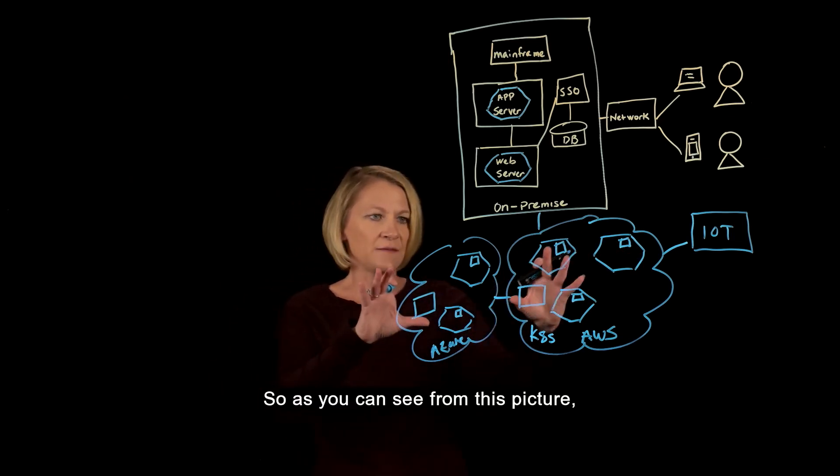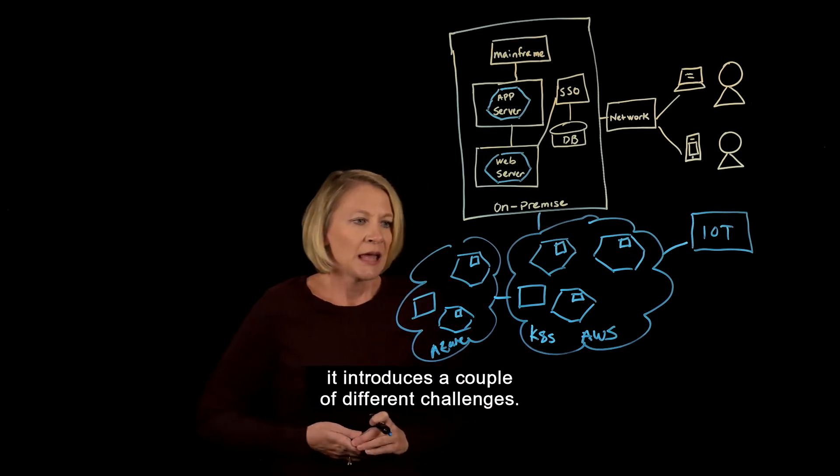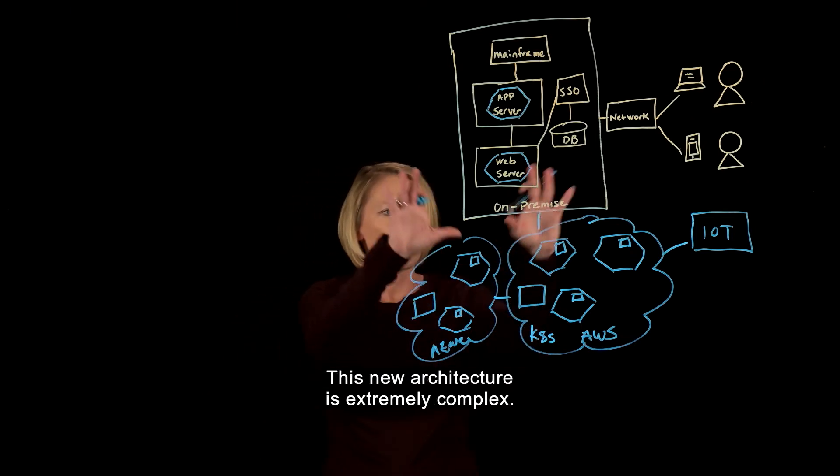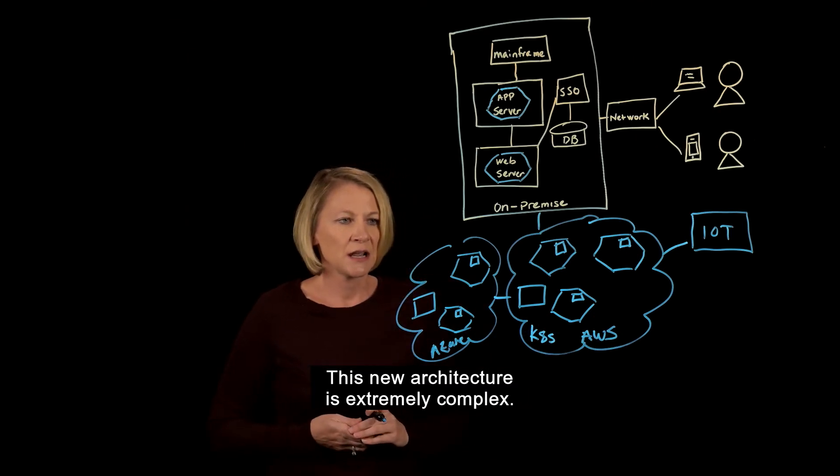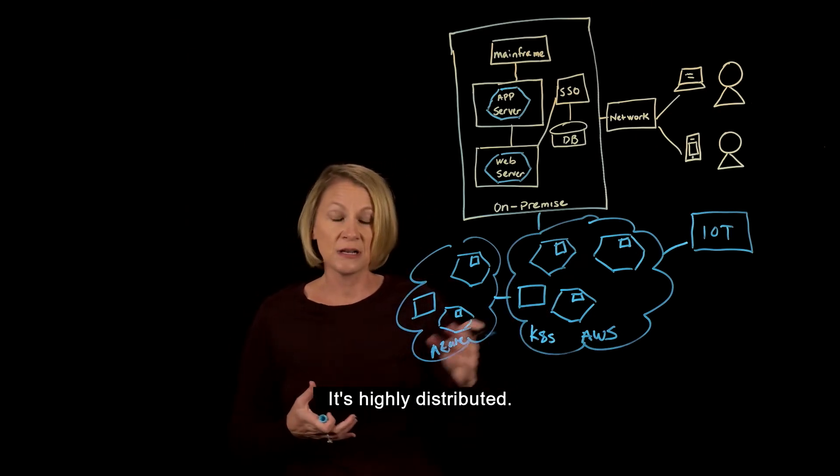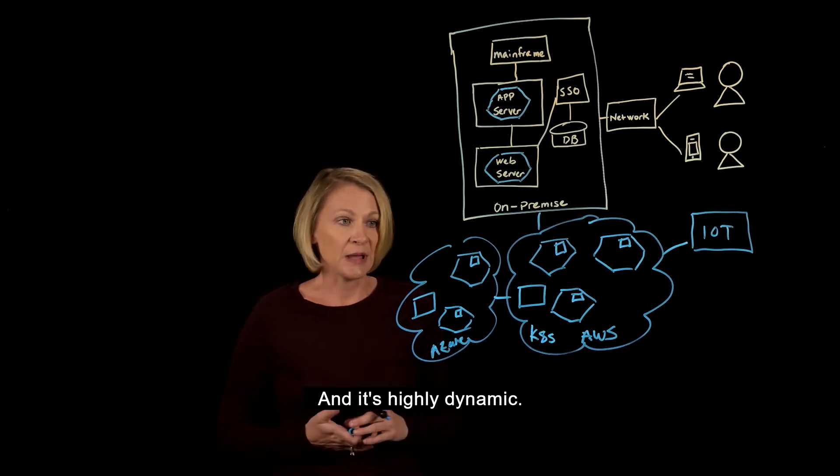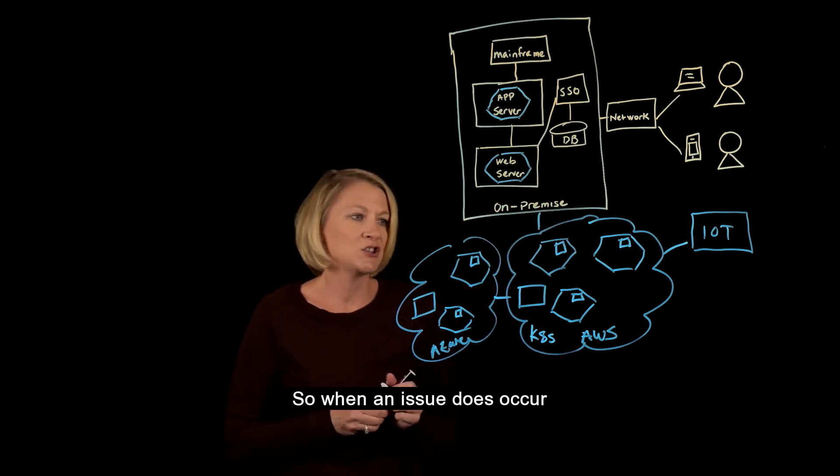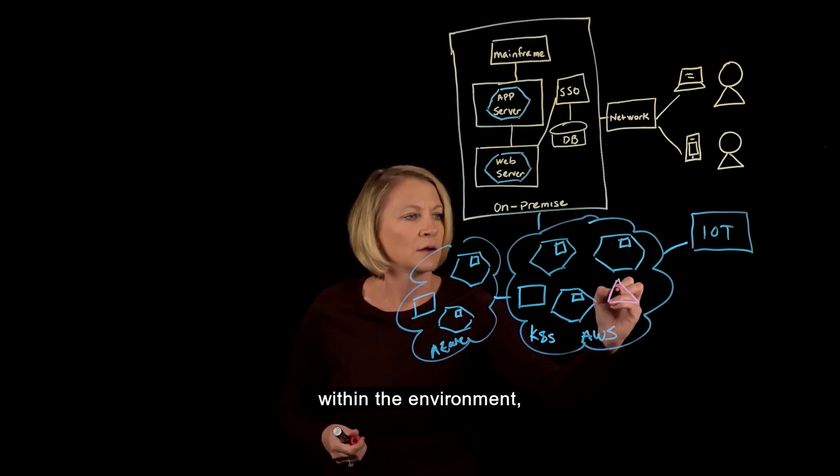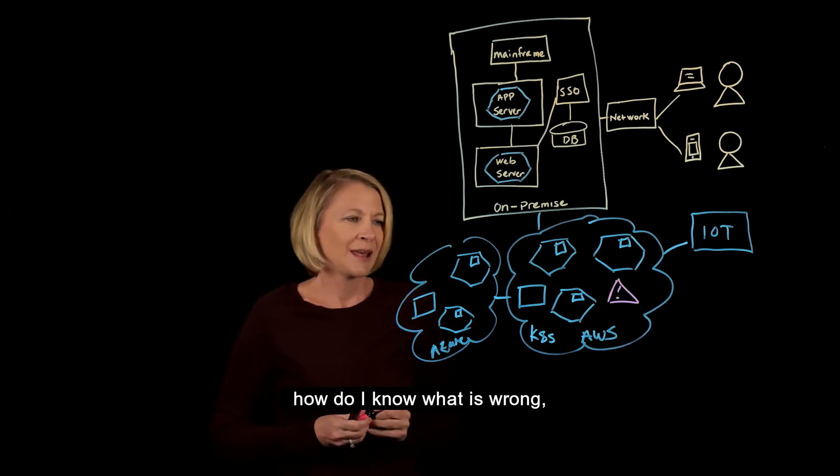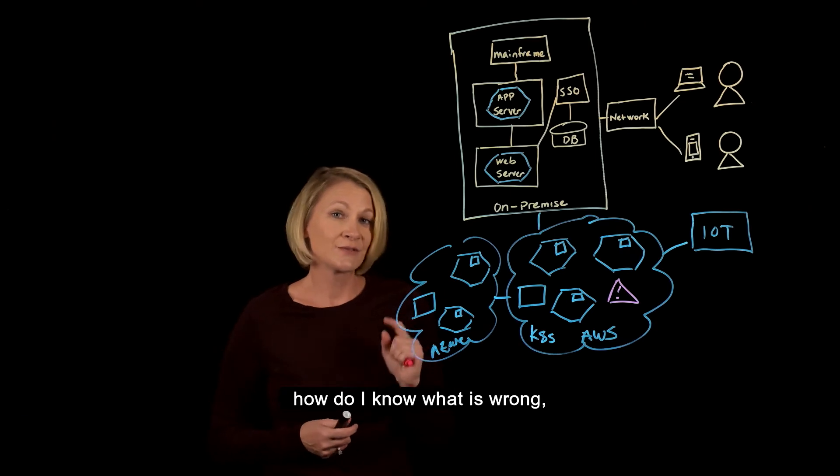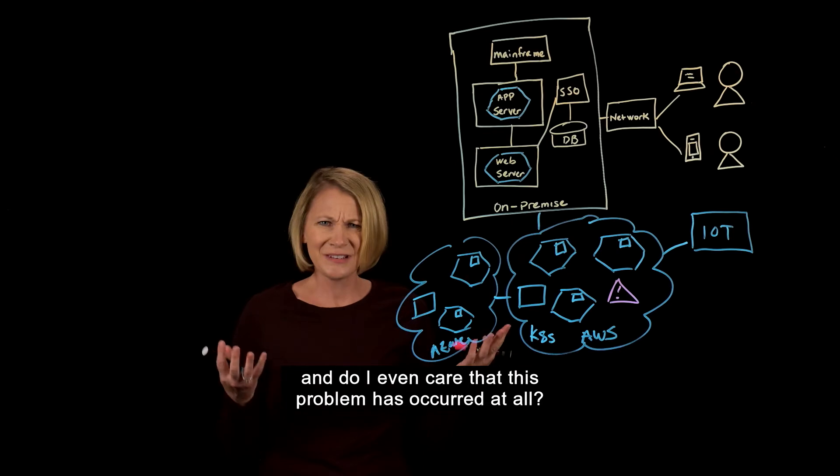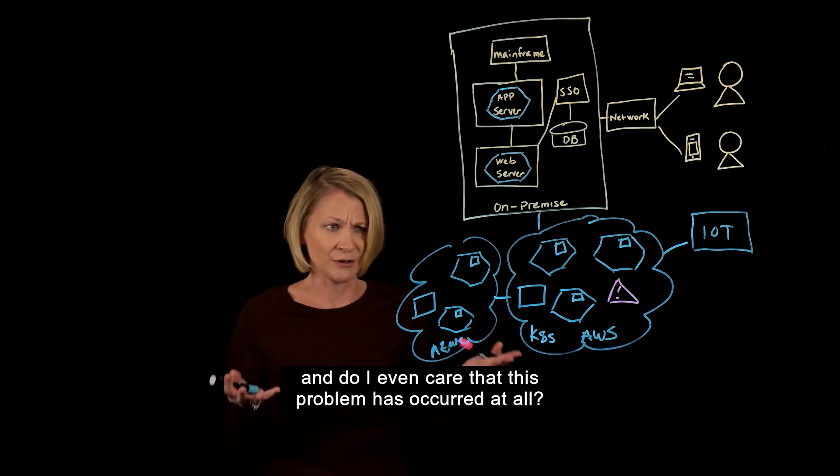As you can see from this picture, it introduces a couple of different challenges. This new architecture is extremely complex, highly distributed, and highly dynamic. So when an issue does occur within the environment, how do I know what is wrong? Why do I have this particular problem? And do I even care that this problem has occurred at all?